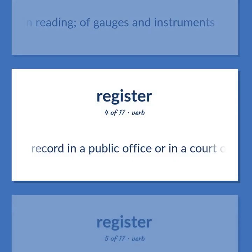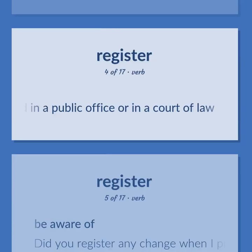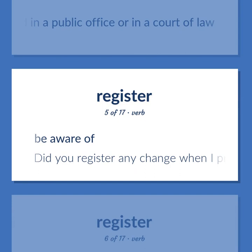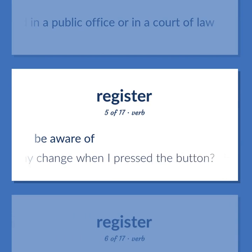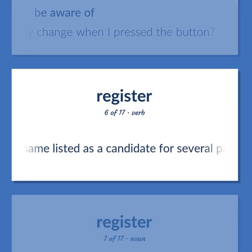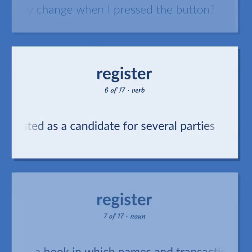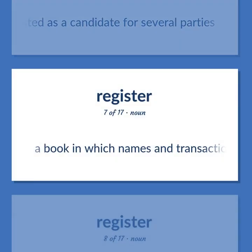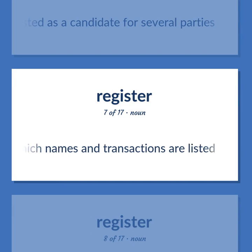Register: record in a public office or in a court of law. Be aware of. Example: did you register any change when I pressed the button? Have one's name listed as a candidate for several parties. A book in which names and transactions are listed.